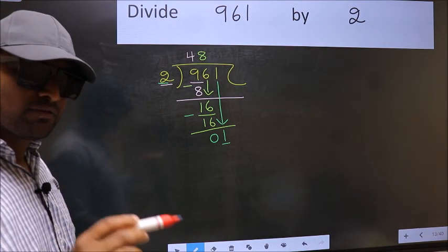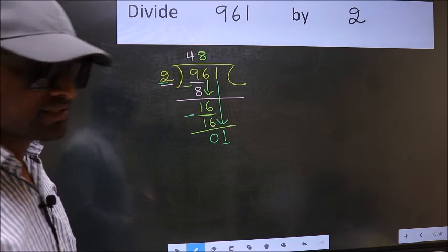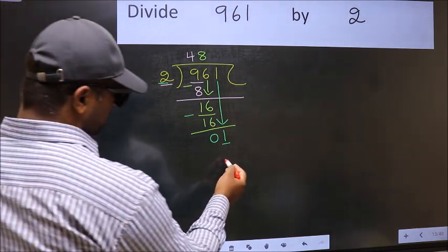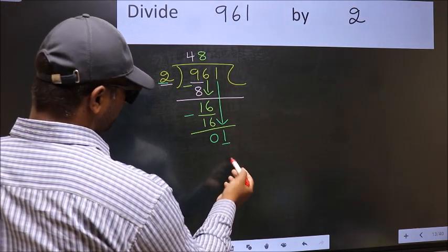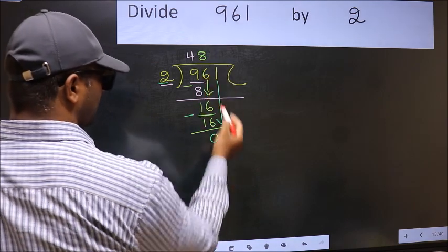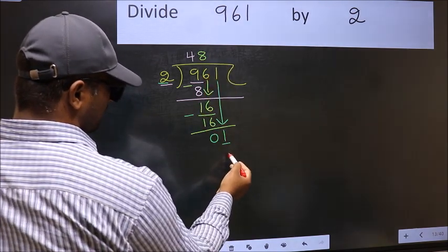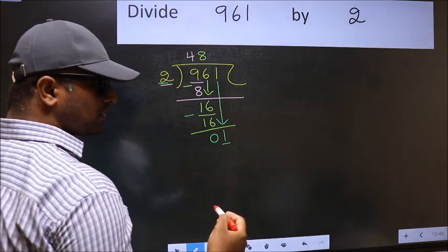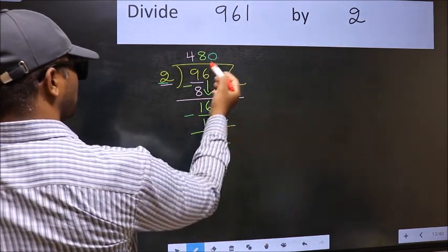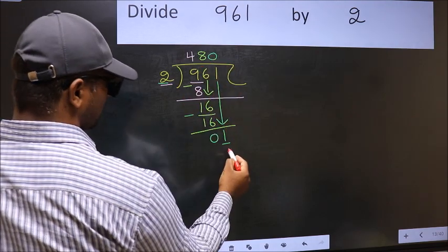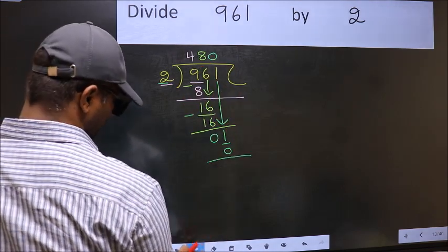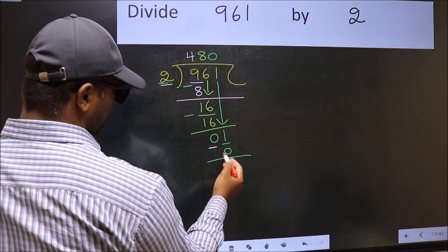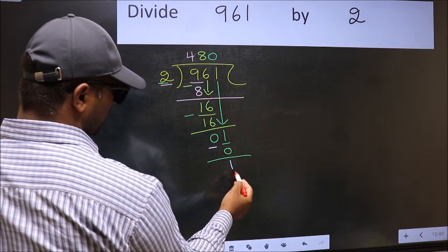Instead, what you should think of—what number should be right here. If I take 1 here, I get 2. 2 is larger than 1. So what we should do is, we should take 0. So 2 into 0, 0. Now you should subtract. 1 minus 0, 1.